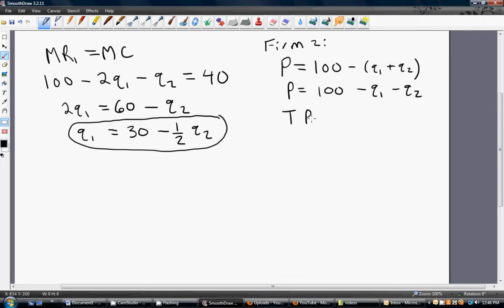We want to get firm 2's total revenue. So just like we did for firm 1, we're going to substitute the inverse demand into the total revenue equation for P. But this time we're going to multiply by firm 2's output, the amount of output sold by firm 2.